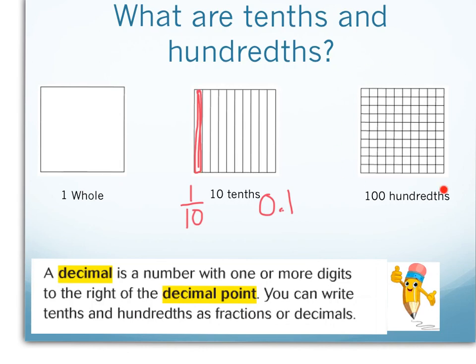My square cut into one hundred pieces represents one hundred hundredths. And by shading in one square, I have one hundredth as a fraction, or zero point zero one as a decimal. It's important to remember that a decimal is a number with one or more digits to the right of the decimal point, and it typically represents a value that is either less than one or a whole number amount with an amount less than one attached to it.